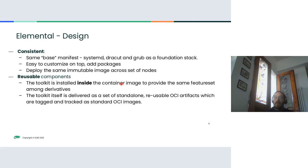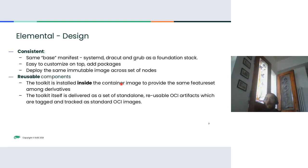All components injected inside the image during the standard Dockerfile flow are reusable. The toolkit is installed inside the container image and provides the same feature set among derivatives. You can pin to specific versions of the toolkit components — no snowflakes. The toolkit itself is delivered as a set of standalone and reusable OCI artifacts, tagged and tracked as standard OCI images. If you want to rebuild part of the toolkit and store it privately, you can. Having just one registry means you have not only the image but also the fundamental parts of the toolkit — enabling integration with security scanners and other container registry tooling.